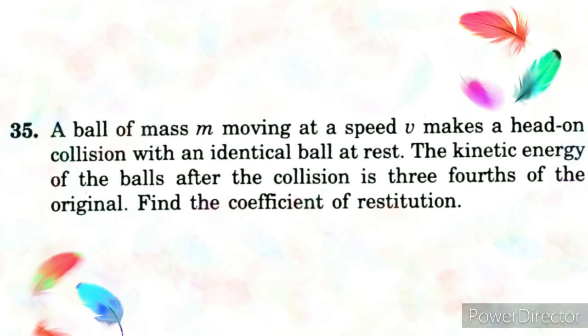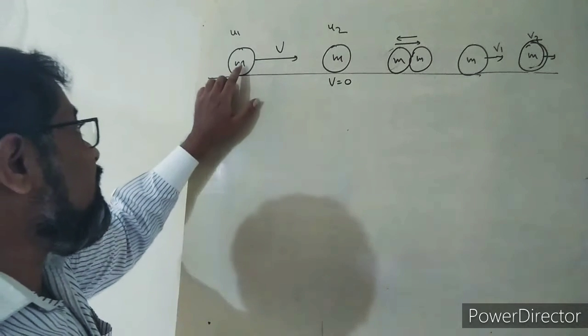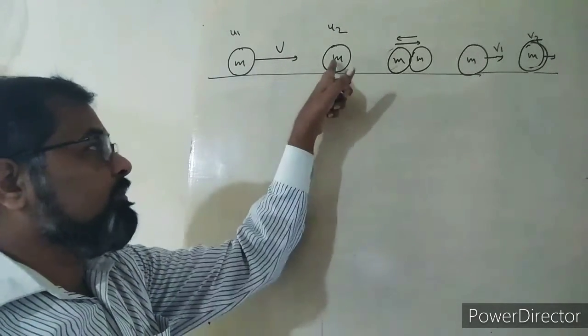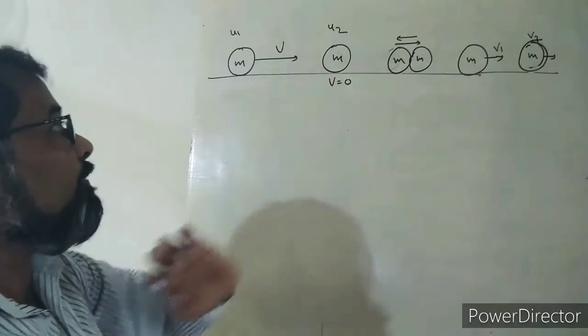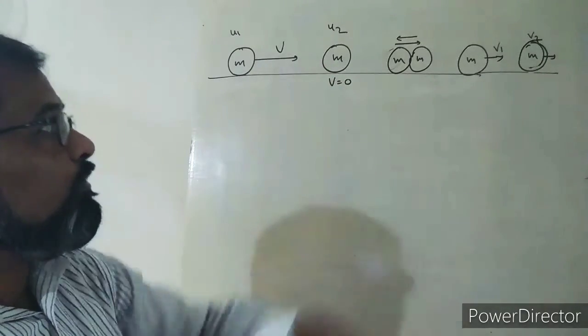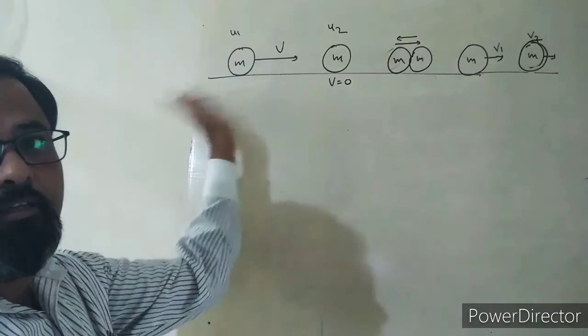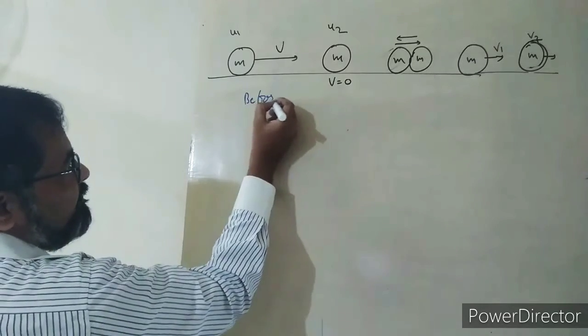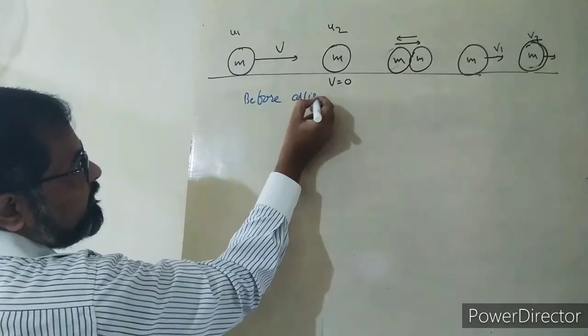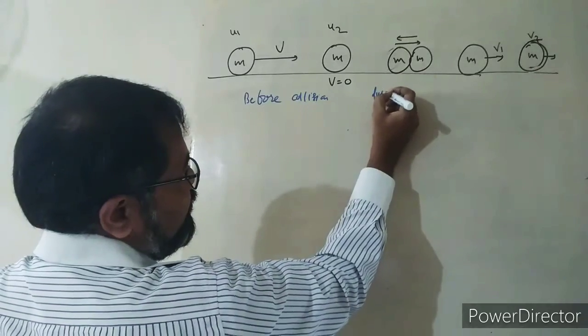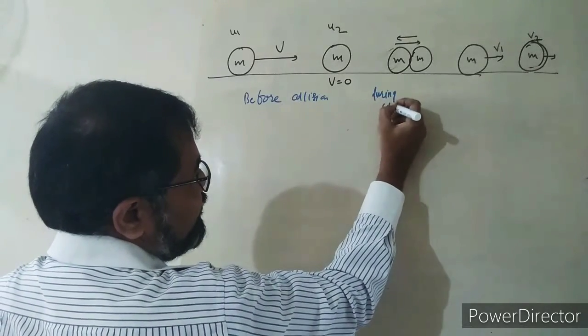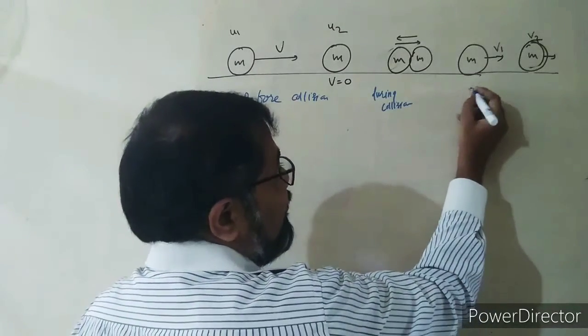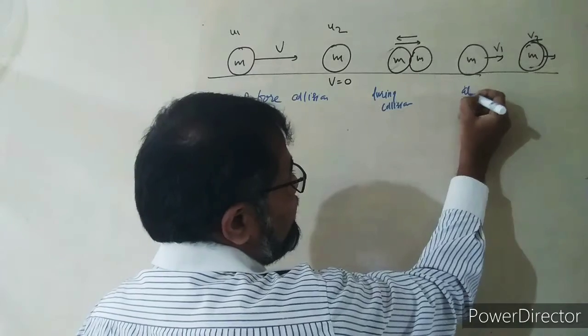So this ball of mass m is moving at some velocity and collides with an identical ball of mass m at rest. During the collision, energy is lost. We need to analyze the situation after collision.